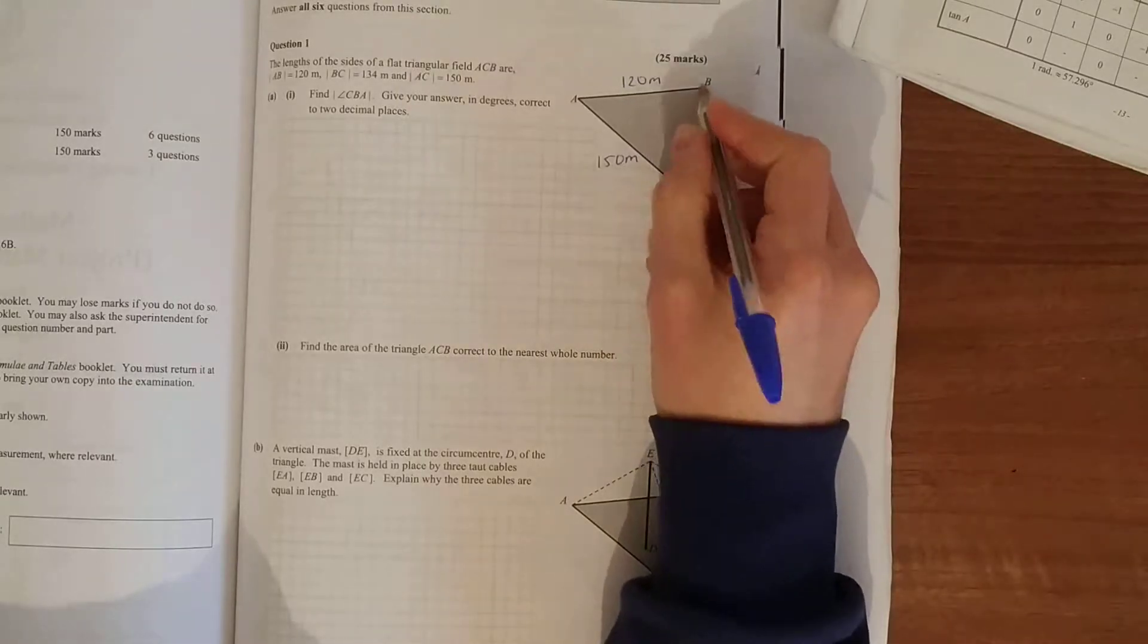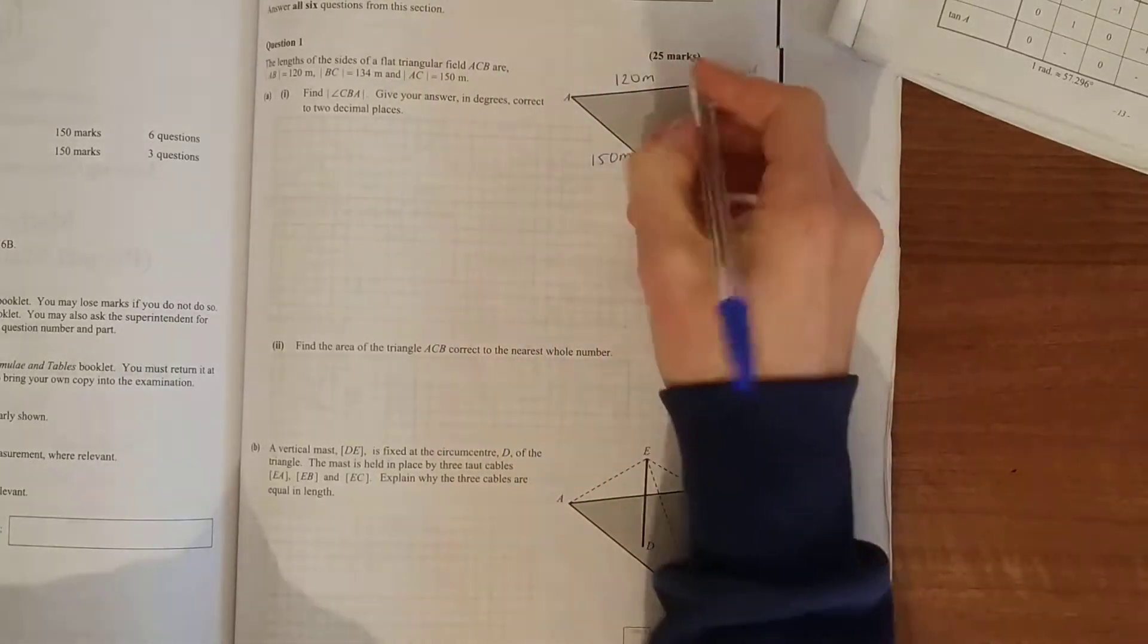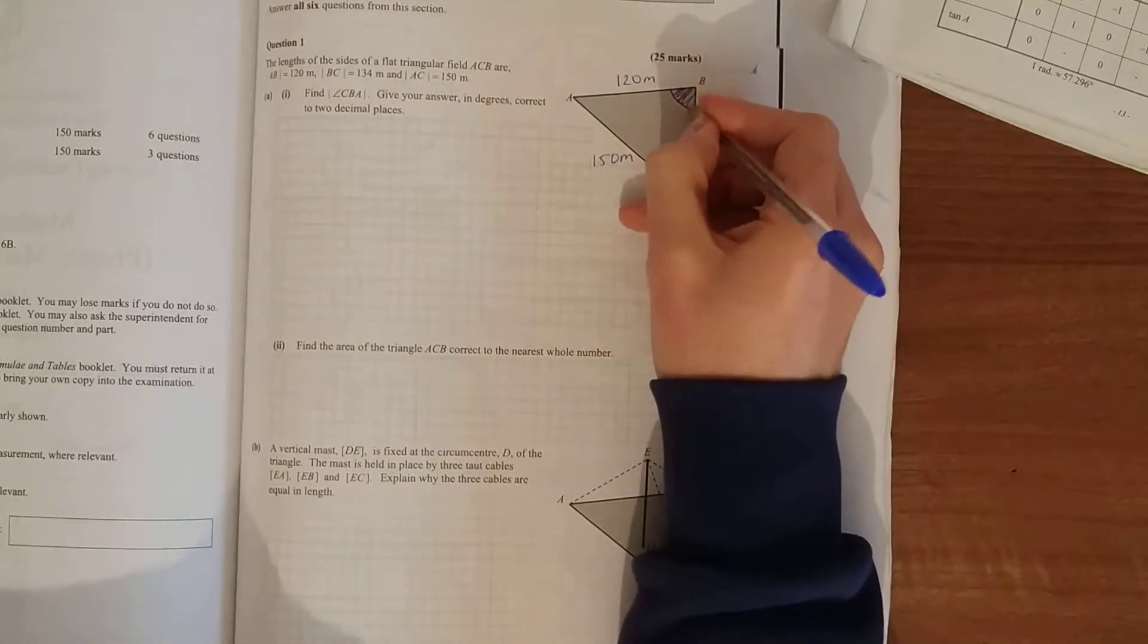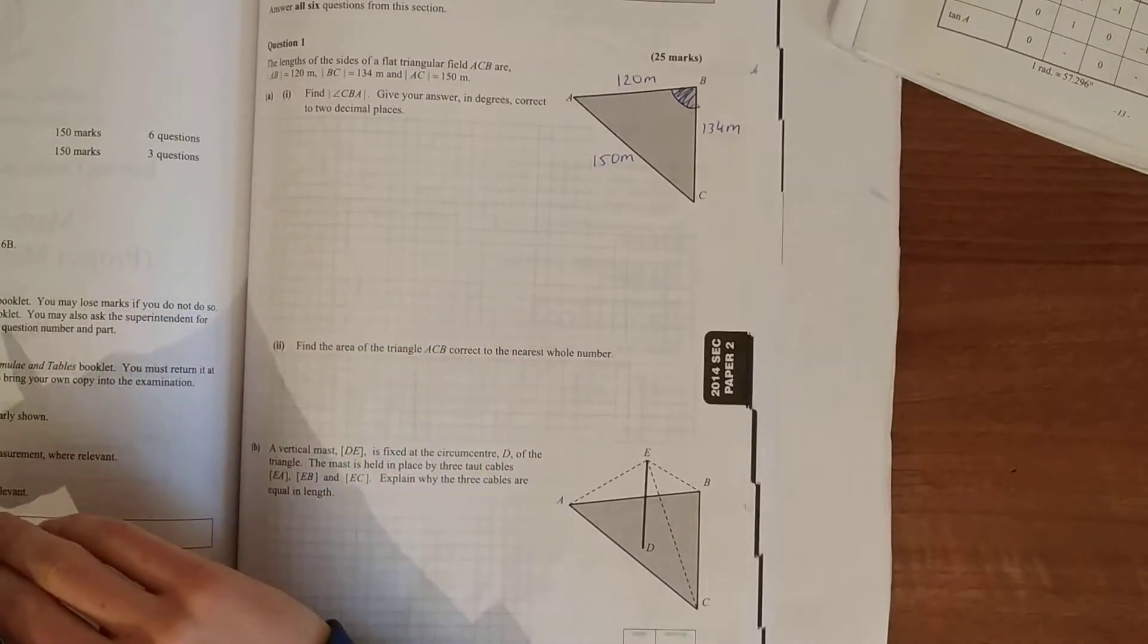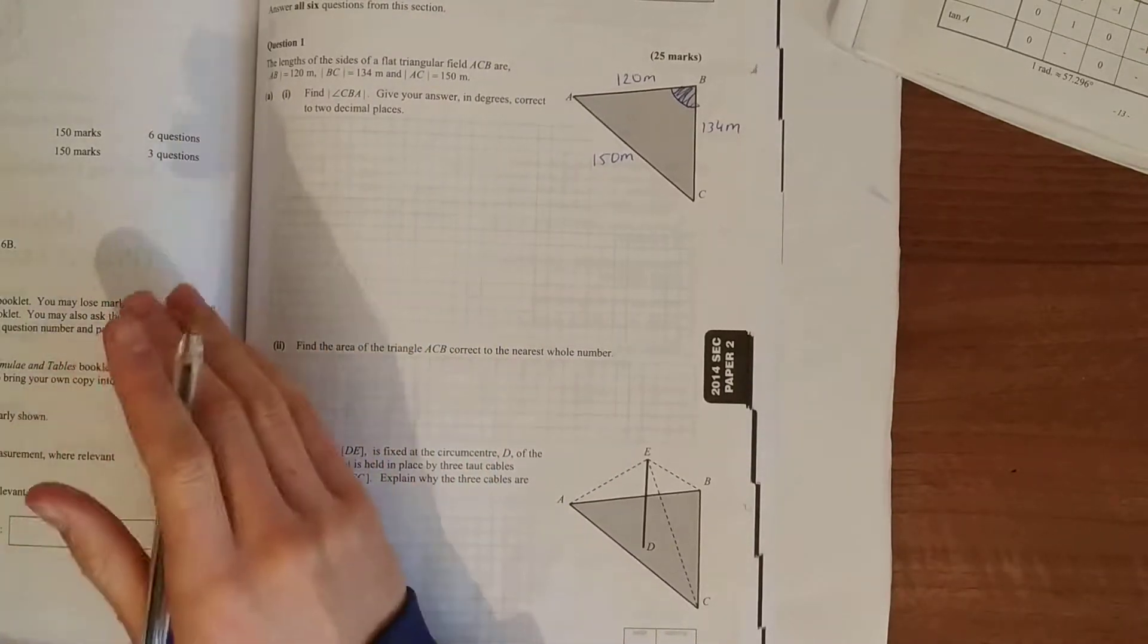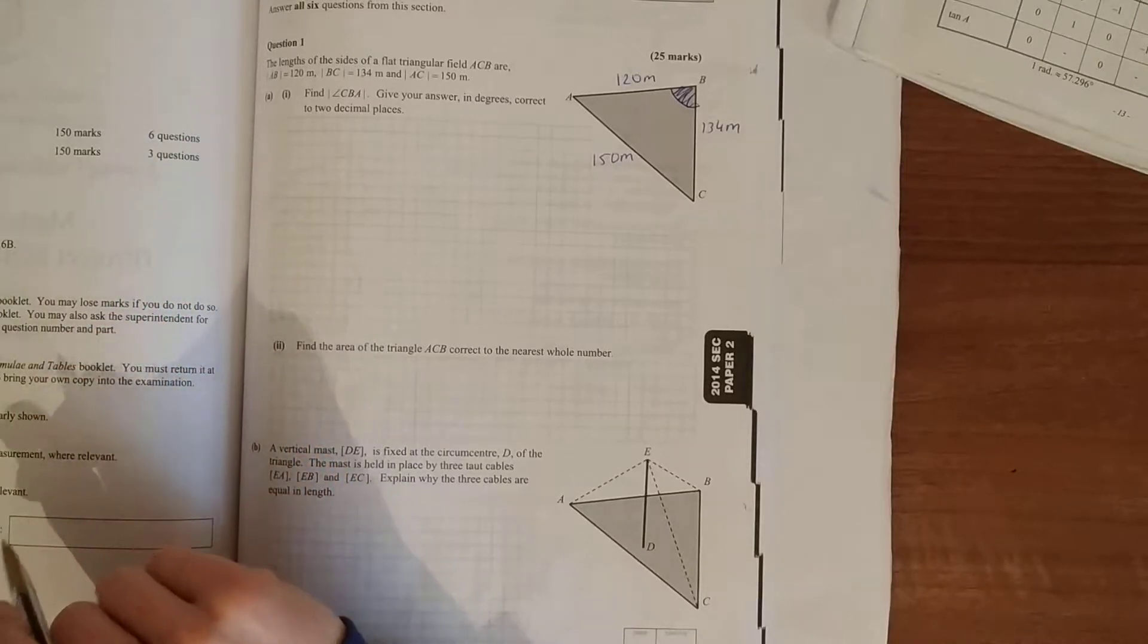So C to B to A, we're going to find the angle in the middle, angle B. Now here we can't use sine, cos, or tan, the trig identities silly old Harry or Oliver have a handful of apples, because it's not a right angle triangle.